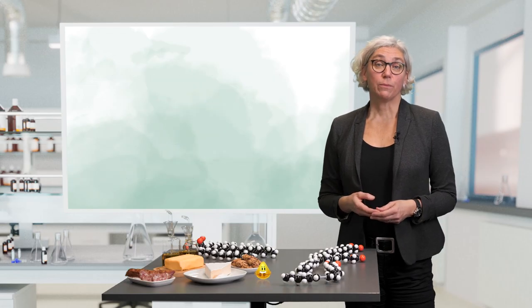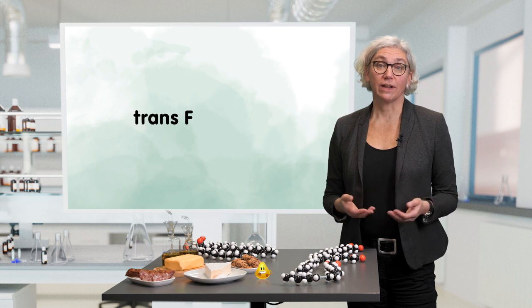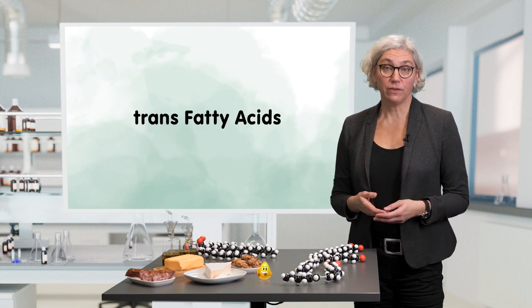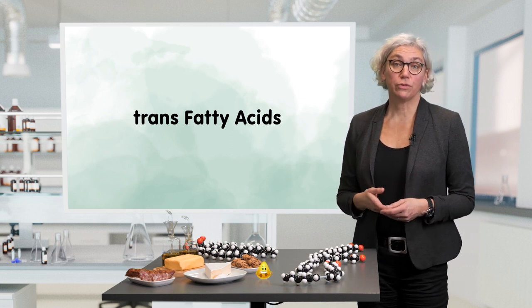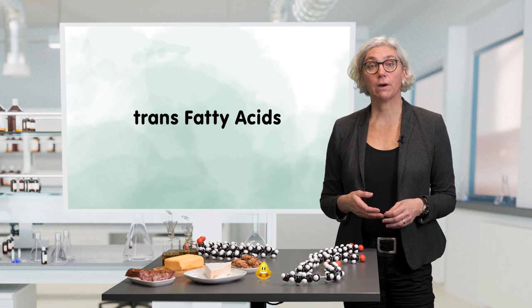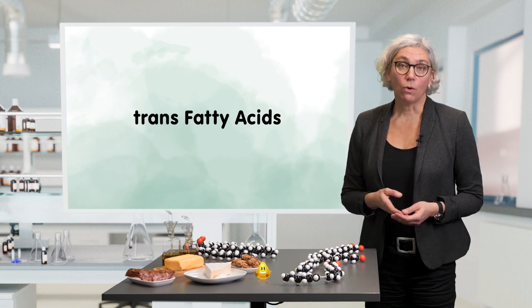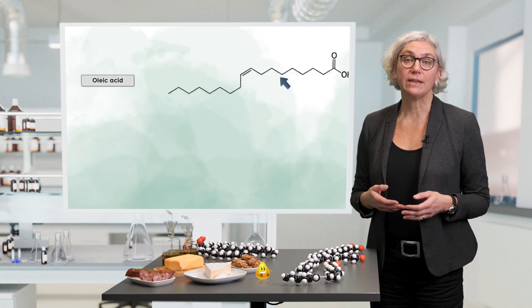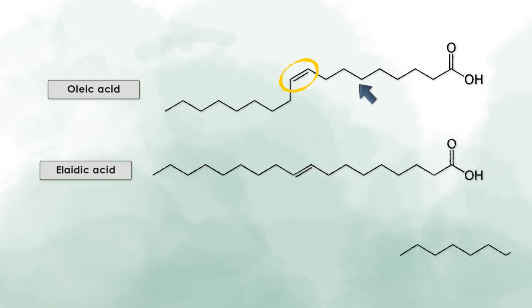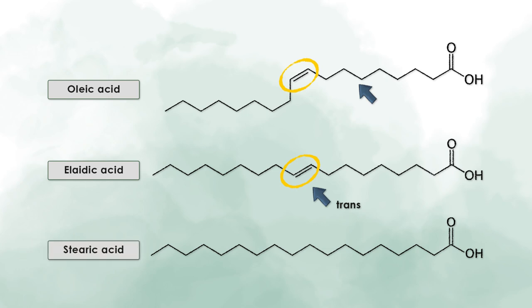There is another term that you should be familiar with and this is the term trans fatty acid. Trans fatty acids are unsaturated fatty acids and the term trans refers to the geometric arrangement of the double bond in the carbon chain. In fats and oils derived from any plant material, the double bonds are always arranged in the cis form as you can see at the example of oleic acid. When the double bond is arranged in the so-called trans form, this gives a different geometric shape which is similar to that of saturated fatty acids. You can see this at the example of stearic acid.